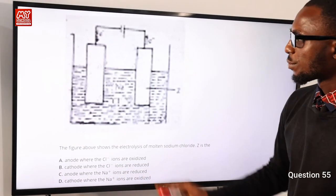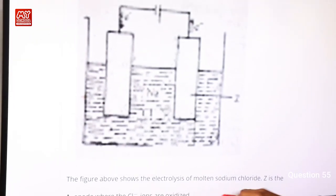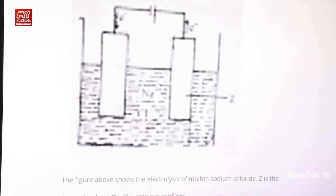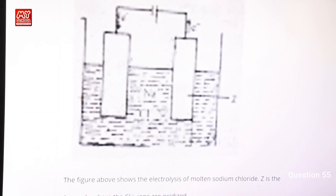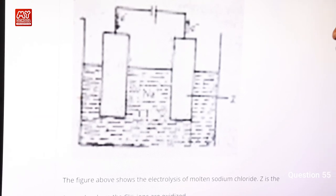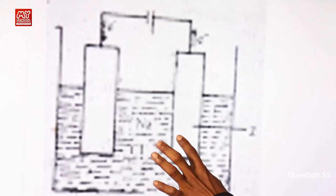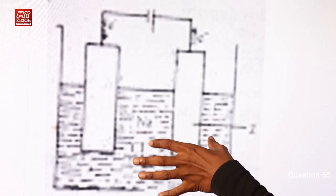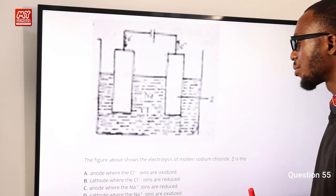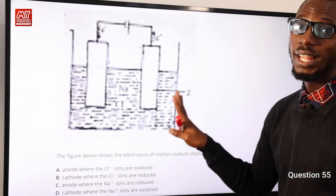Question 55: The figure shows the electrolysis of molten sodium chloride. In electrolysis of NaCl, sodium cations move toward the cathode and chloride ions move toward the anode where they are oxidized. Z is the anode where chloride ions are oxidized. Option A is correct.